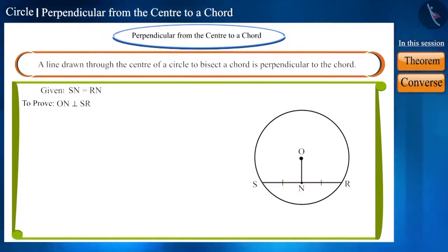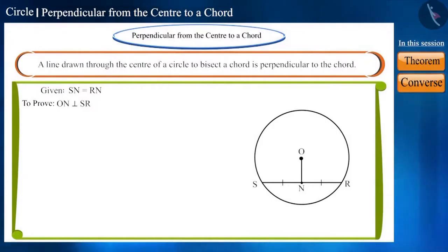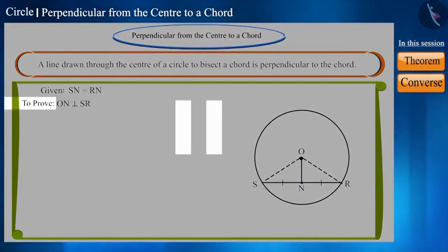Friends, for this we have to prove that angle ONS and angle ONR measure 90 degrees. How will you prove this? You can pause the video and think. Friends, if we join these two points with the centre, we will get two triangles, triangle ONR and triangle ONS. Can we prove them to be congruent? Yes. Pause the video and do it yourself.